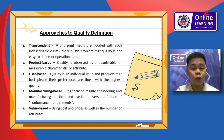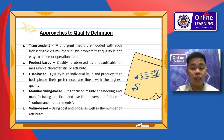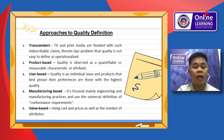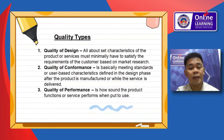For the product-based approach, quality is observed as a quantifiable or measurable characteristic or attribute. In the user-based approach, quality is an individual issue and the product that best satisfies their preference is chosen as high quality. Manufacturing-based focuses mainly on engineering and manufacturing practices and uses the universal definition of conformance to requirements. For the value-based approach, quality is defined using cost and price as well as a number of attributes.